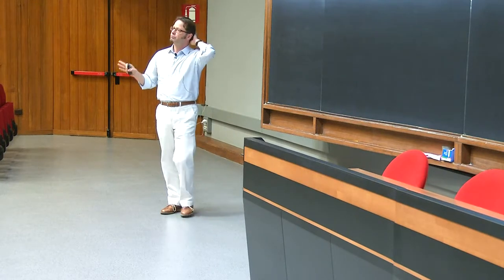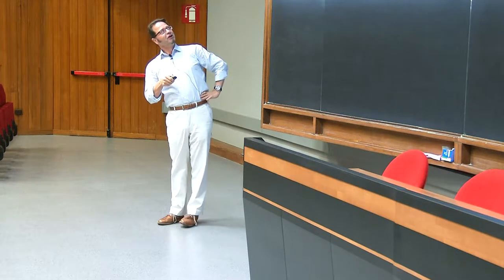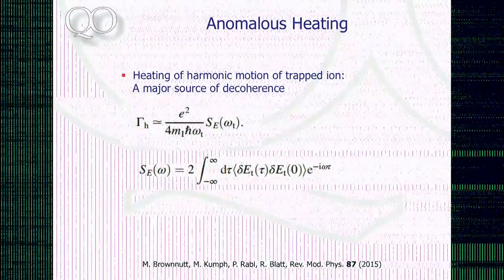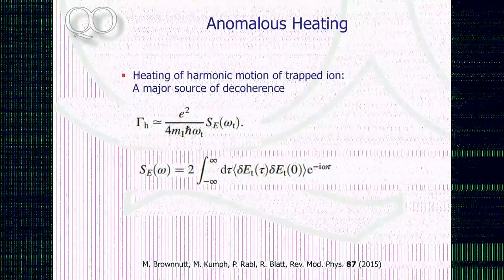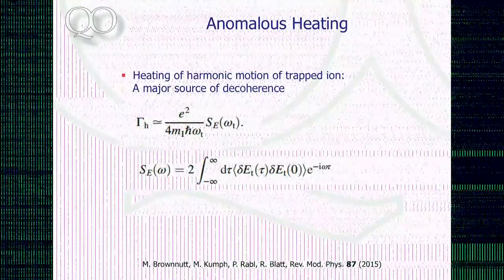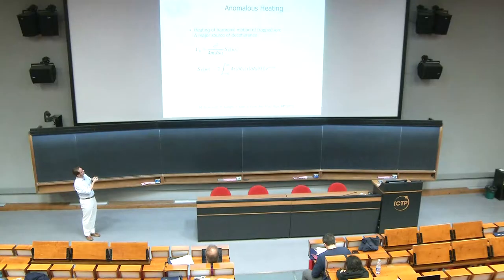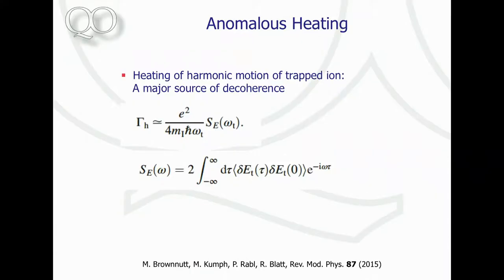Let me present just two formulas — the rest is formula-free physics. You have a charge and fluctuating electric fields. These fluctuating electric fields move around your charge and heat it up. The heating rate is well approximated by an expression involving the charge, the mass of your ion, and the harmonic oscillator frequency of your trap. SE is the spectral density of your electric field noise — that's the important quantity.